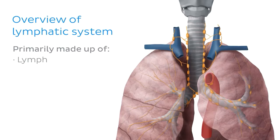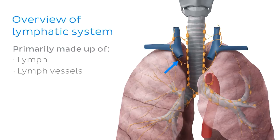These substances enter the lymphatic system through little capillaries that run into the lymph vessels. Lymph vessels are part of the lymphatic system and they transport lymph throughout your body. They contain valves just like veins so that lymph can travel in only one direction forwards. You can see some lymph vessels on the image here.